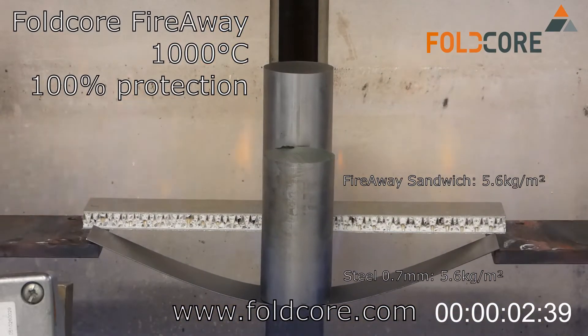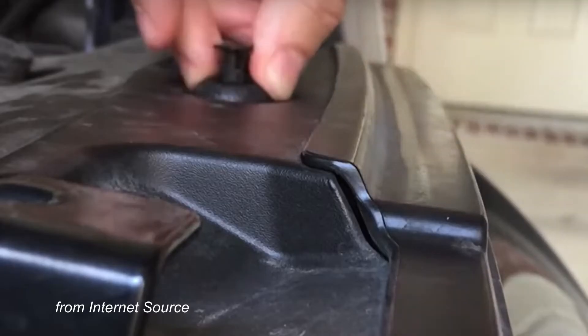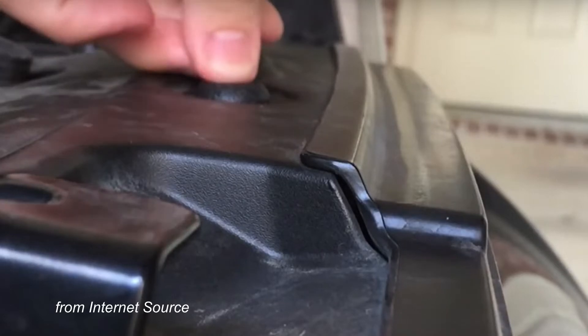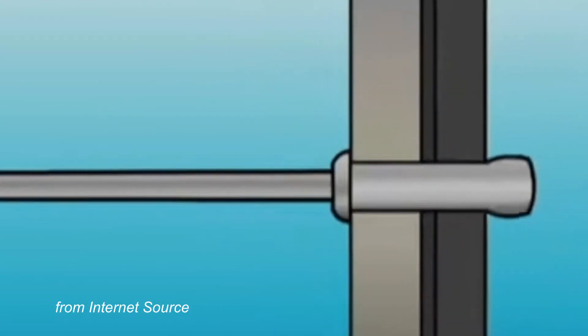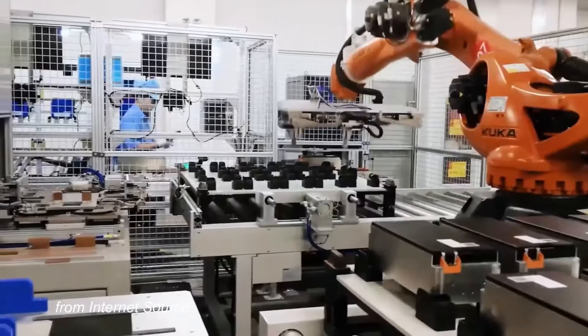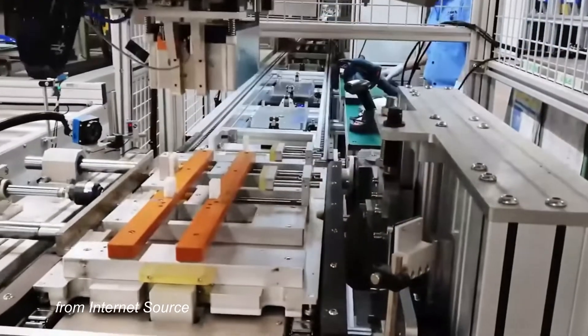FireAway is mechanically strong and can be easily attached to the battery pack or chassis with quick fasteners instead of relying on adhesive tapes. This is truly an advantage for fully automated assembly.